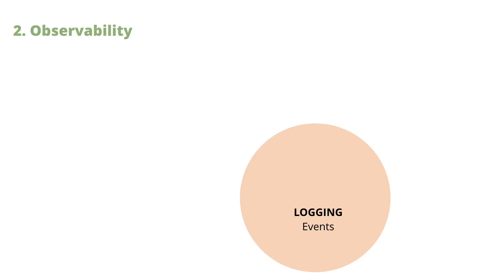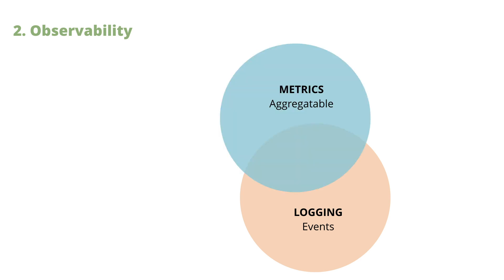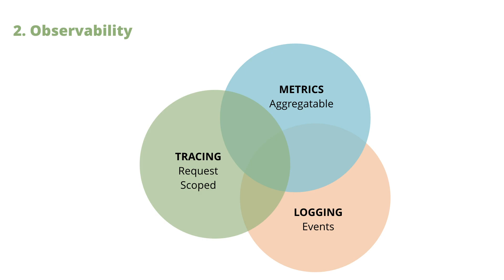For microservices, logging is generally about aggregating service logs in a central logging system where you can do further analysis. Metrics are about collecting information about processes or activities over intervals of time — things like request rate, error rate, and duration of response. One way to disambiguate between the two is that when you have more traffic, the number of events you're logging increases, but your metrics stay about the same. The third thing is distributed tracing, which enables you to reconstruct journeys of transactions across all your microservices, typically by assigning every external request an ID and propagating that ID to all services involved in handling that request.